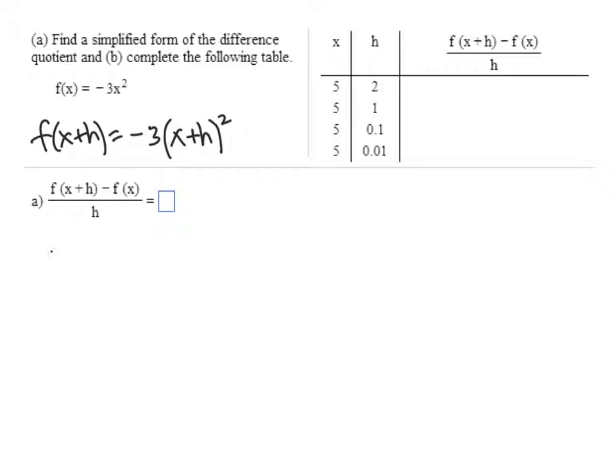So that goes on the top of our fraction, negative 3 times x plus h parentheses squared. Now, minus f of x, and it's important that we use parentheses here, so f of x is just that same formula from before, negative 3x squared. That's just a copy and paste. And then all divided by h.